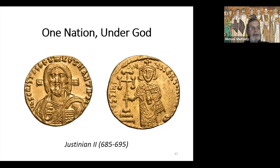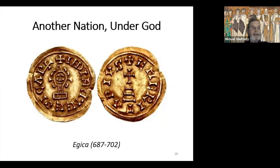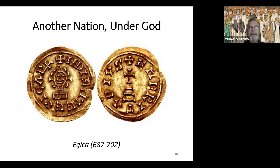This coin is often sold with the tagline 'the first coin to portray Christ,' but that's not quite correct. A year or two before Justinian's coin, the Visigothic king Egica, who ruled what are now Spain and Portugal, struck what was actually the first coin portraying Christ — but the portraiture is so awful it wasn't recognized as Christ until a Spanish scholar identified it in 1945. The coin you see here is a Tremesis minted about 690, a year or two before Justinian's coin.